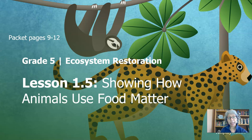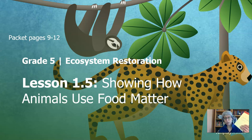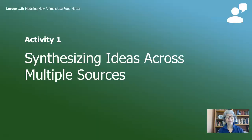This is the fifth video in the series and we will be looking at several activities showing how animals use food matter. If you have the packet, you can follow along on pages nine through 12. If you don't have the packet, that's fine — you can just use paper that you find around your home. First activity: synthesizing ideas across multiple sources.